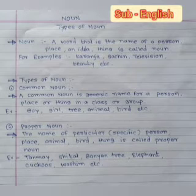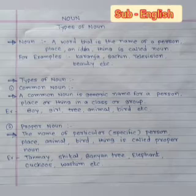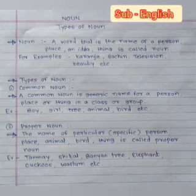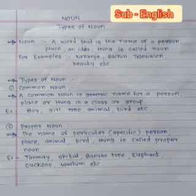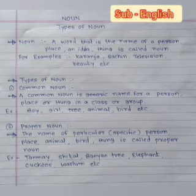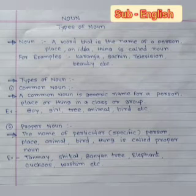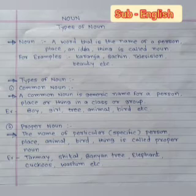Number 2 is Proper Noun. The definition of Proper Noun is: the name of a particular, specific person, place, animal, bird, or thing is called Proper Noun. For example, Tanmay is the name of a boy, Shittal is the name of a girl, Banyan Tree is the name of a tree, Elephant is the name of an animal, Cuckoo is the name of a bird, and Vashim is the name of a city.